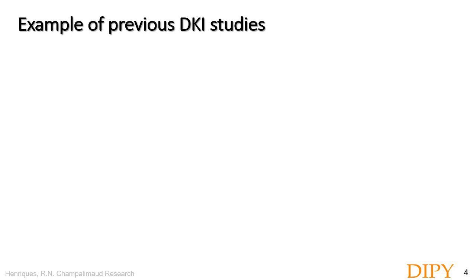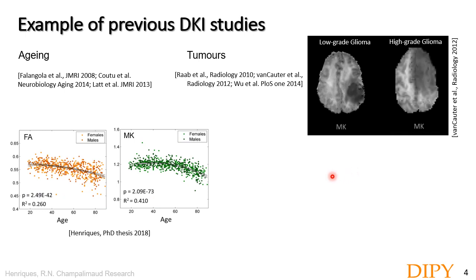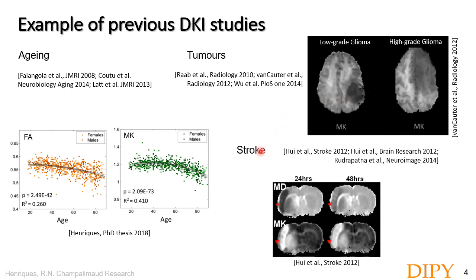I will show some concrete examples of how DKI can provide better characterizations than DTI based on previous studies. For example, in aging, it was shown that while FA shows negative correlations with subject age that did not match behavioral changes, mean kurtosis values across age show that early FA declines are not related to declines in tissue non-Gaussian properties. Mean kurtosis seems to be sensitive to late maturation processes. In tumors, mean kurtosis values also better correlate with tumor grade, where more aggressive tumors are associated with higher mean kurtosis values. In stroke, kurtosis is more sensitive to the extent of ischemic lesions than mean diffusivity.